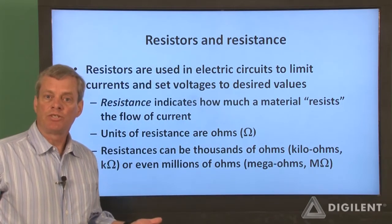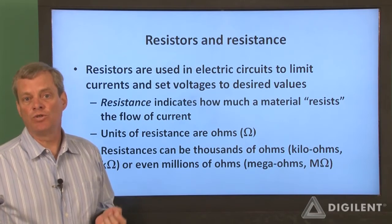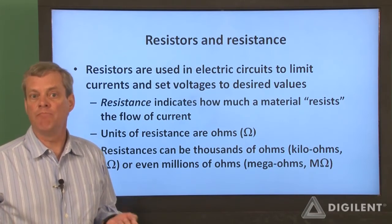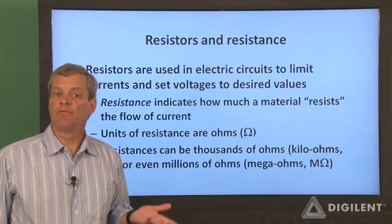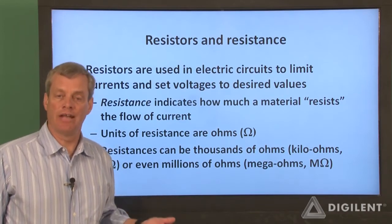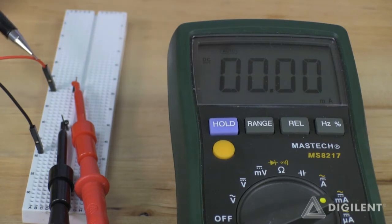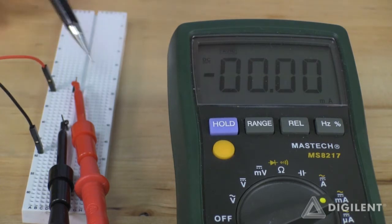Now let's do some quick demonstrations to illustrate these points. In these demos, we'll apply voltages to resistors and measure currents. The process of using the equipment to do these is explained in other projects. Now let's take a look at how the current through a resistor is affected by the resistance value. We'll apply five volts to a resistor using the voltage instrument of the Analog Discovery and measure the current using our digital multimeter.